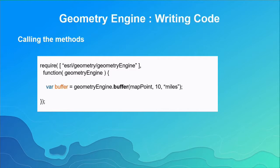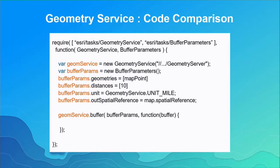Comparing to the geometry service: with the 4.x API you still AMD-load the geometry service, create buffer parameters, fill in all the properties, make the call — which is a network request — and handle the callback. Using the client-side geometry engine does simplify your code, but it doesn't mean less code is being run. The geometry engine is a very large module and it's running an awful lot of code to perform those geometry operations. So it's a very large module you're downloading into your client application.